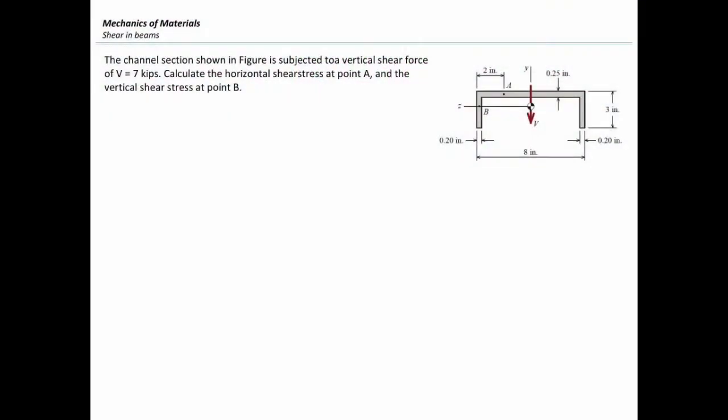I have a C-section here, which is subjected to a vertical shear force equal to 7 kips. In this problem, I want to determine the value of shear stress at point A and point B. The basic equation that I have here is: shear stress is equal to VQ over IT.